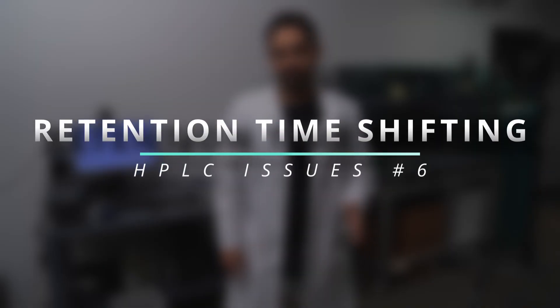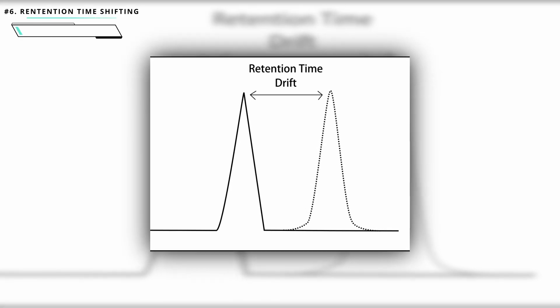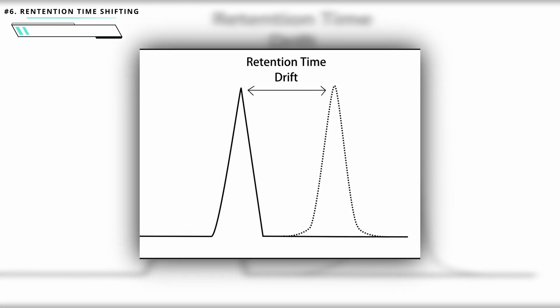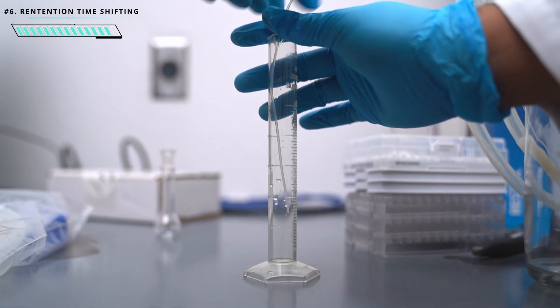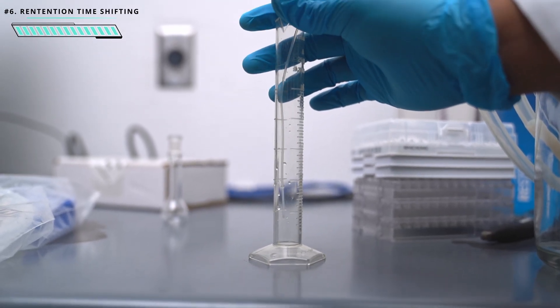Number six is retention time shifting — if your peaks are shifting around your chromatogram, it's caused by a few things. Your pumps may not be delivering solvents at the correct rate, especially if you're running a gradient. Also, you might not be equilibrating your column long enough after a run, so equilibrate longer to ensure stable conditions before your next run. To check pump delivery, flow one pump at a time into a graduated cylinder to identify which pump is giving problems.